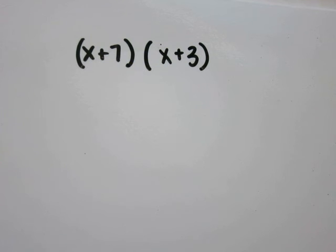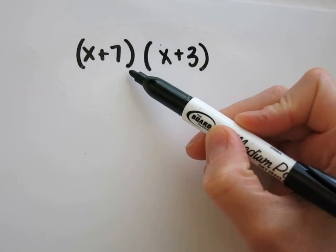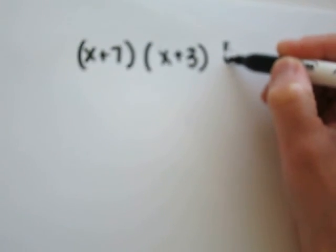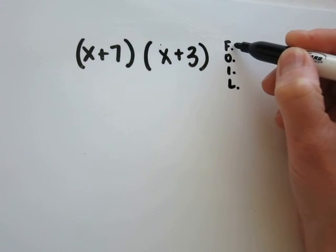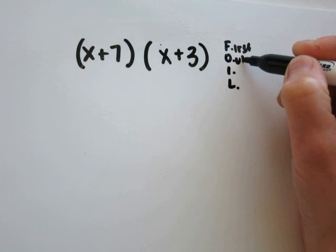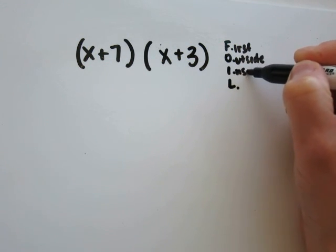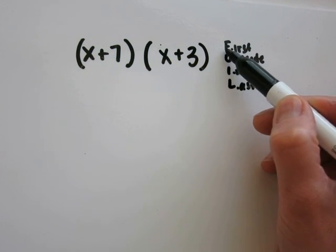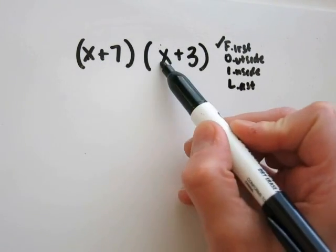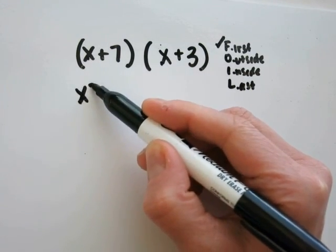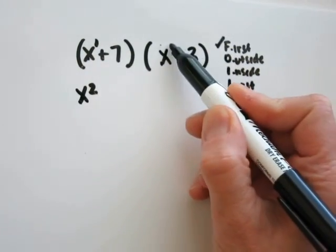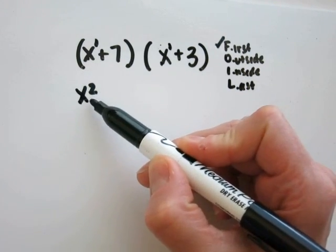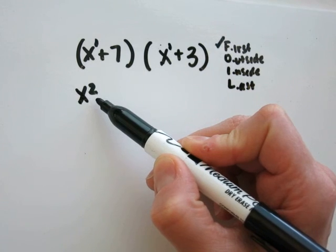Problem 18: x plus 7 times x plus 3. Any time I am multiplying two polynomials, I use something called FOIL. It stands for first, outside, inside, last. You'll start by multiplying the first numbers together, so x times x. Since you have the same base, it's the same as x to the 1st power — add the exponents, 1 plus 1 is 2 — so x times x becomes x squared.